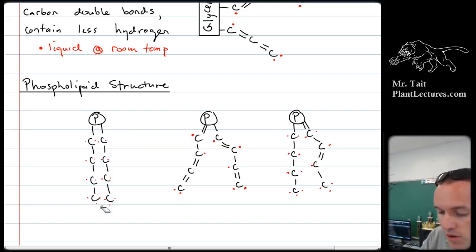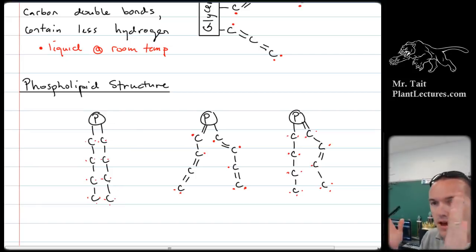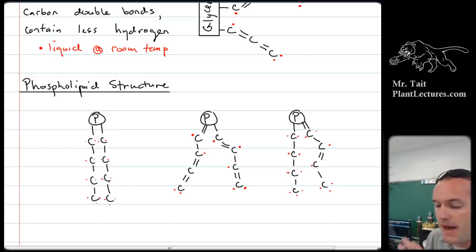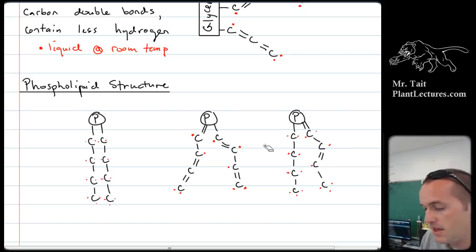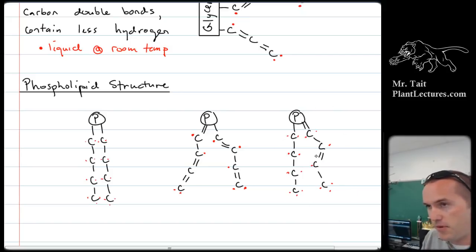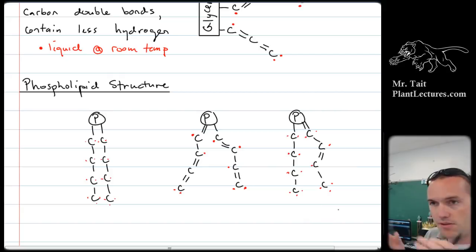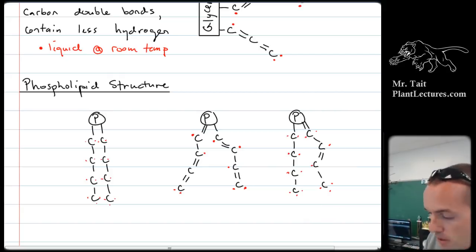If you have no kinks in the tails, that would be a really rigid plasma membrane, which would be bad. And then if you have too many kinks, that's a really fluid plasma membrane. The perfect medium is where you have some that are kinked and some that aren't kinked, so you'll have the right amount of fluidity in the plasma membrane.